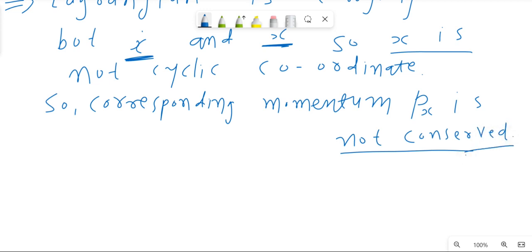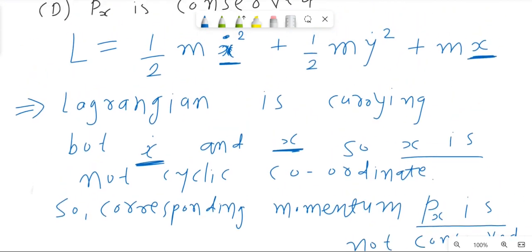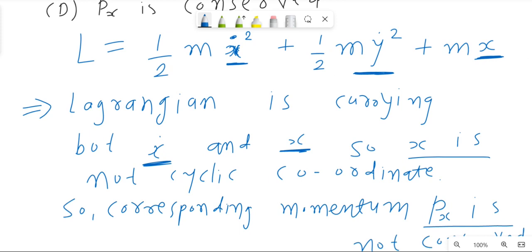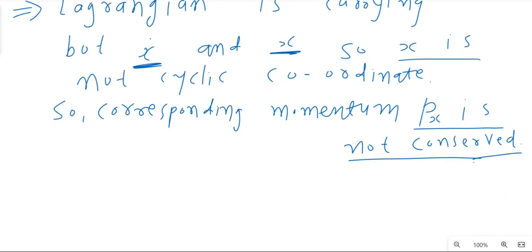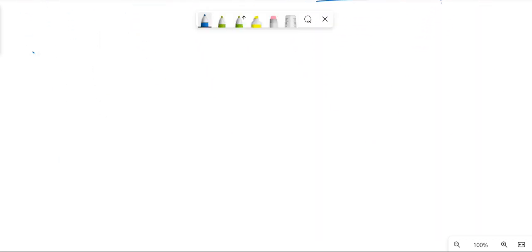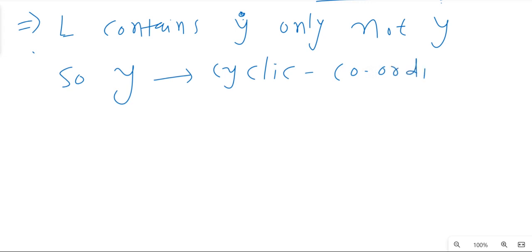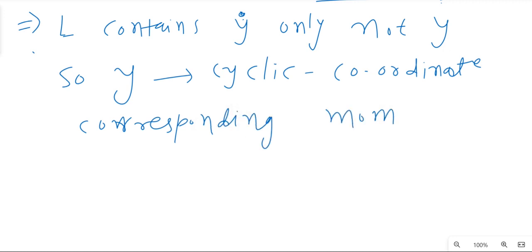Now you can see the Lagrangian contains only y-dot but does not contain y. So y is a cyclic coordinate, and the corresponding momentum py is conserved.